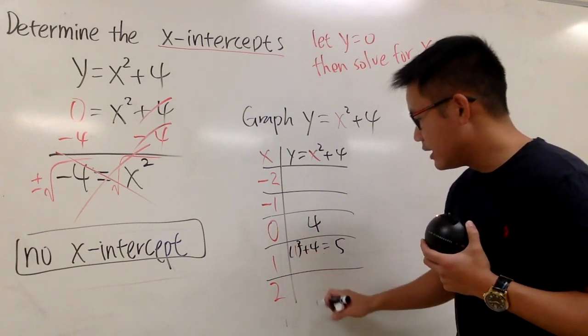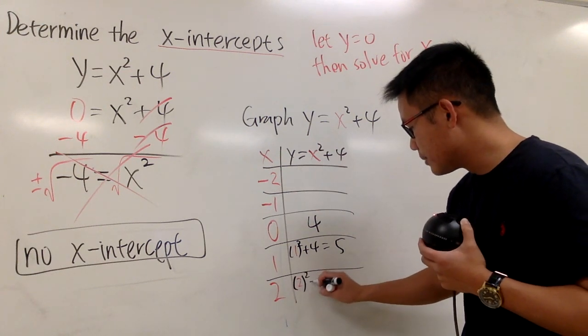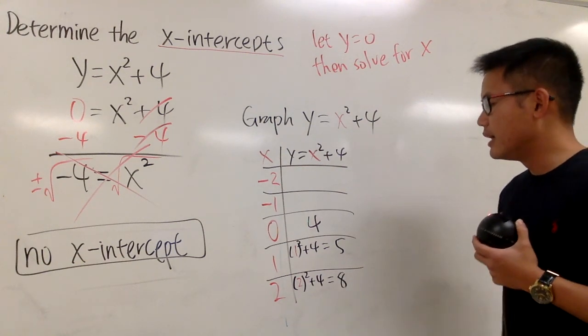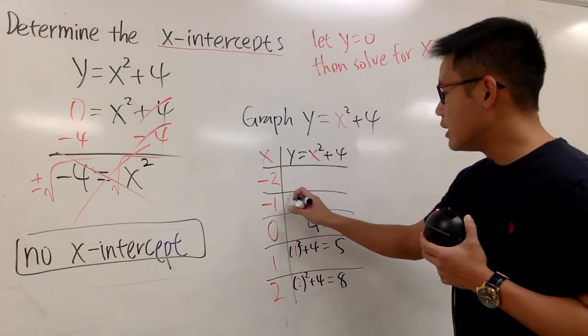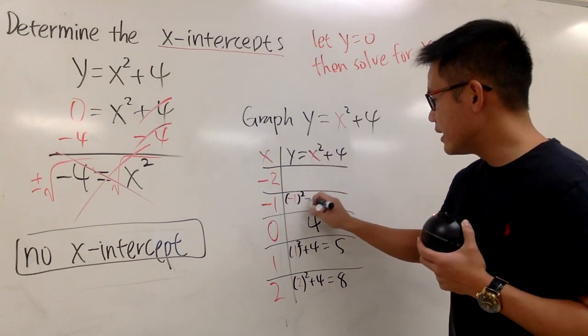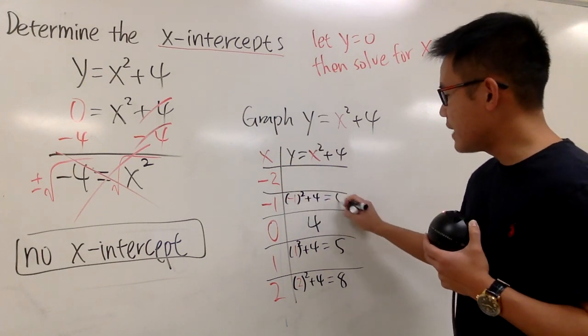If you plug in 2, you get 2² + 4, which is 4 + 4 = 8. Likewise, plug in -1 for x, and (-1)² = 1, plus 4 is 5.